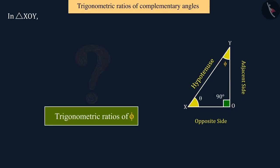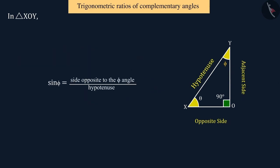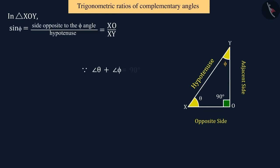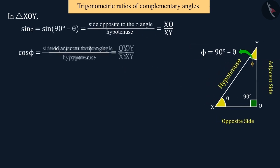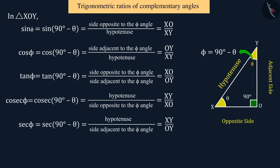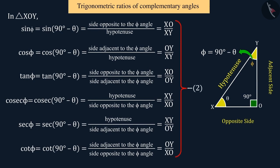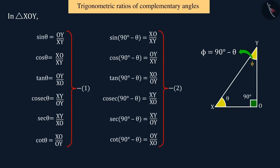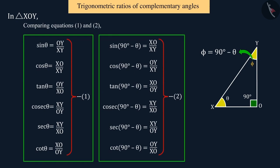So now, can you find the trigonometric ratios of the angle phi in the triangle XOY? The value of sine phi will be equal to the ratio of the opposite side of angle phi and hypotenuse, where the opposite side is XO and hypotenuse is XY. But from the figure, we can see that theta and phi form a pair of complementary angles. Hence, let us substitute phi with 90 minus theta. Similarly, find values of other trigonometric ratios, which are represented by the two equations.